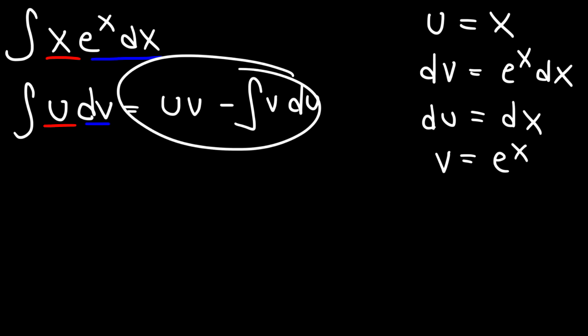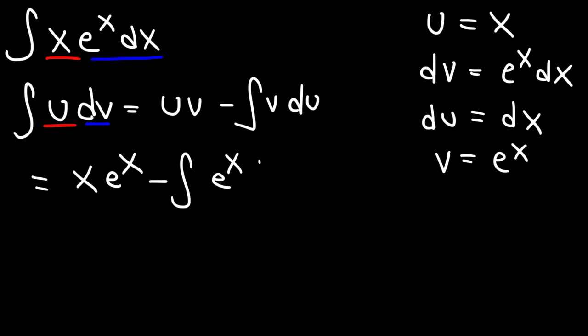So using this formula, it's going to be u times v, so that's x e to the x minus the integral of v du. v is e to the x, so du is just dx.